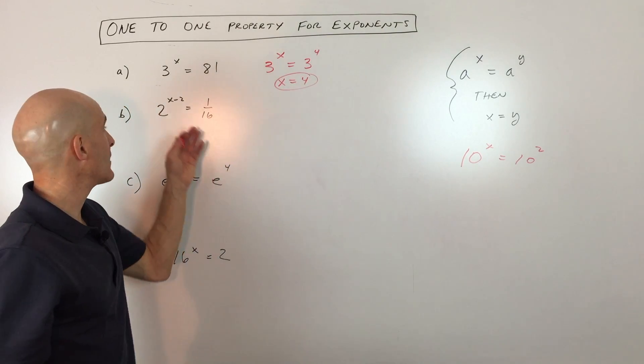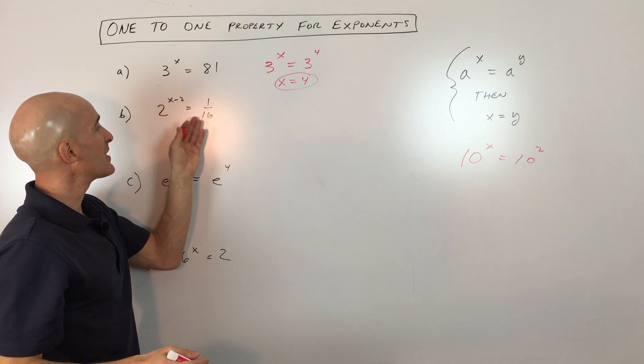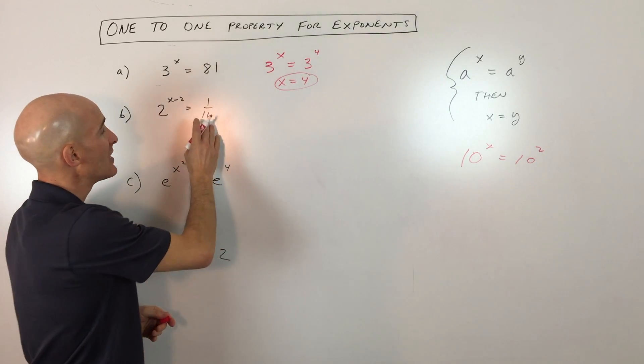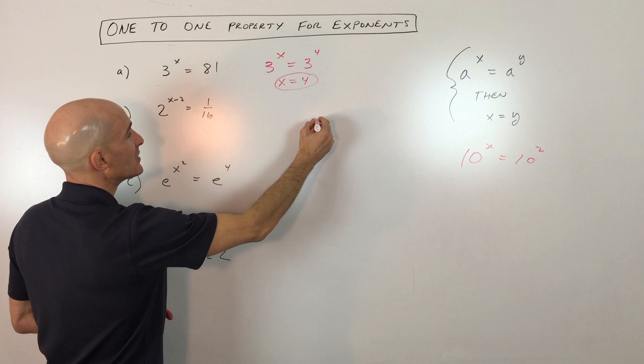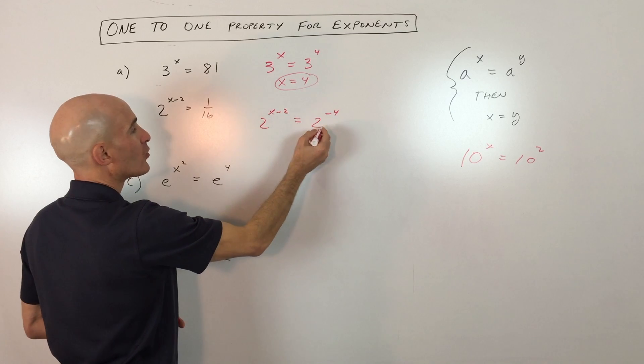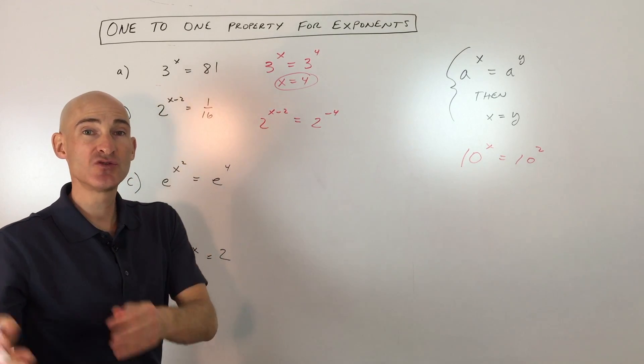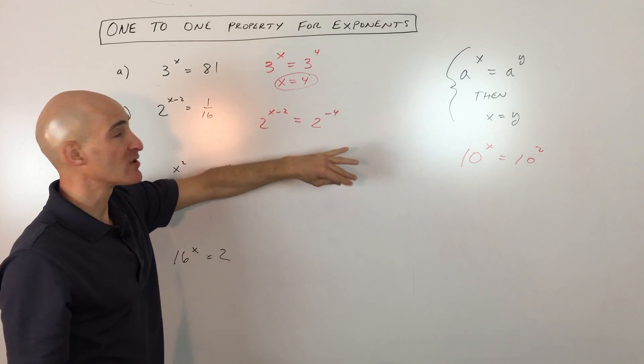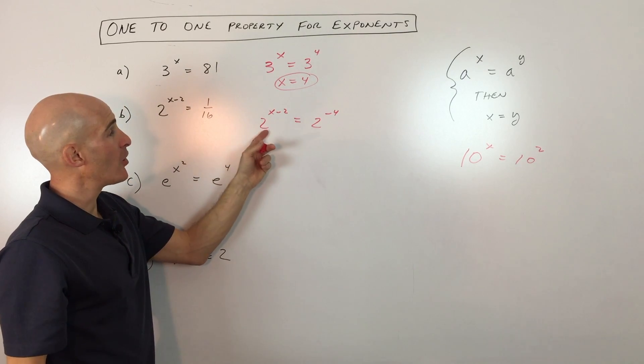Let's look at another example. Here we have 2 to the x minus 2 equals 1/16th. Now what you want to recognize is that 1/16th is actually 2 to the negative 4th power. Why 2 to the negative 4th power? Well, 2 to the 4th is 2 times 2 times 2 times 2, 4 times, that's 16, but the negative exponent tells us to take the reciprocal.